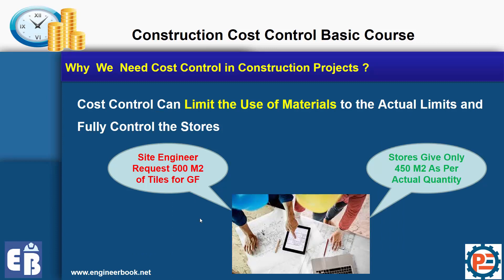One more thing here about prevention action. If you integrate cost control with the stores in your construction project, you can prevent site engineers from requesting additional materials. For example, a site engineer may request 500 square meters of tiles for the ground floor. The storekeeper or cost control engineer can stop this and issue only 450 square meters, because the actual quantity of ground floor tiles is only 450 square meters. This is the kind of prevention action cost control can perform.